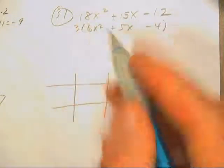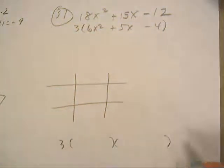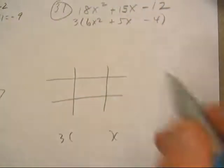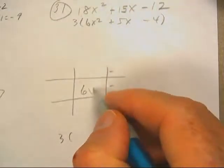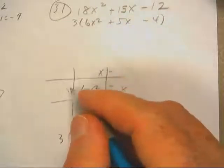So this 3 will just show up down here on our answer in a minute, so don't worry about it. And look, last term negative, so I get that. I want to do the engine, the caboose, and the 4x's.